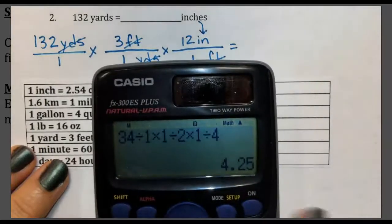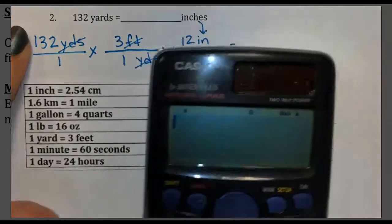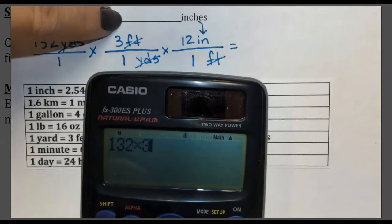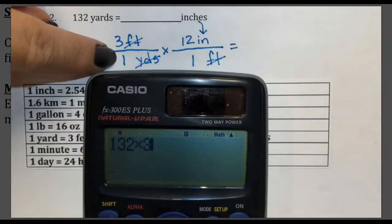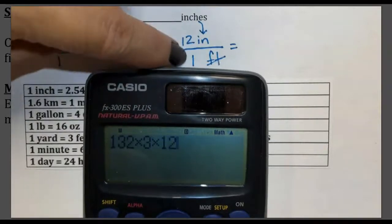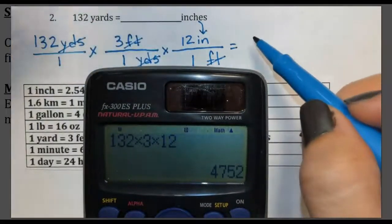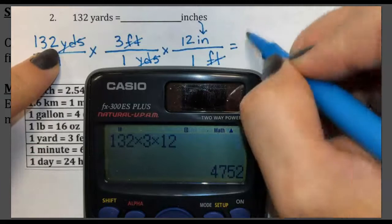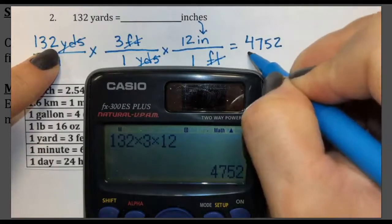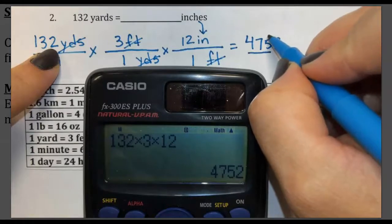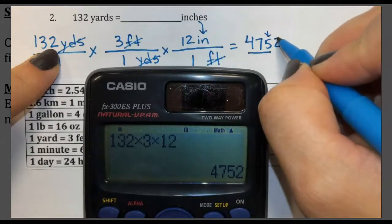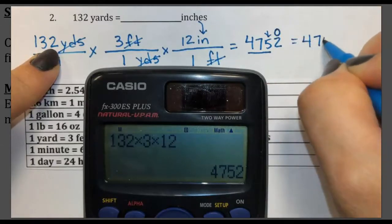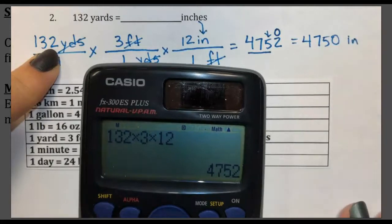Now we calculate. Type in 132, times 3, divided by 1, times 12, divided by 1, and we get 4,752. However, I can only have 3 significant figures. Rounding 4,752 to 3 sig figs: the 5 stays because it's followed by a 2, and I add a zero placeholder. So the final answer is 4,750 inches.